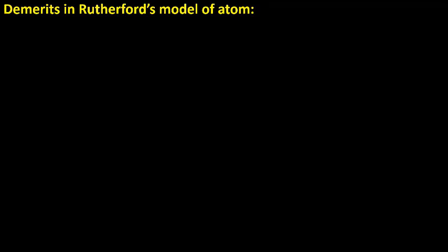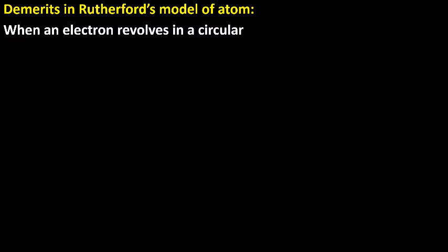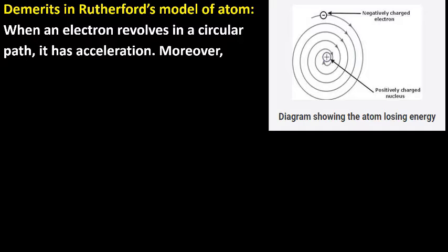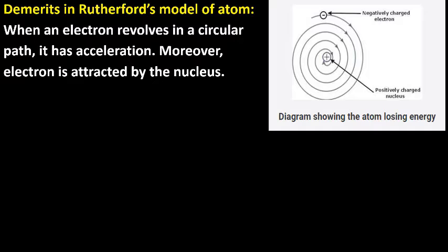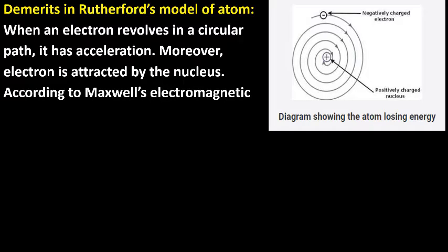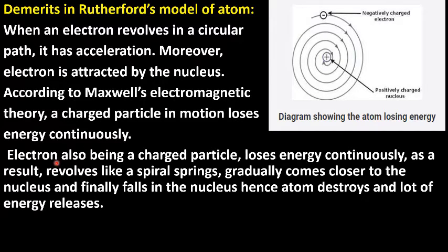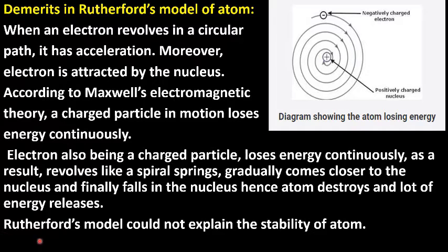Let us recapitulate the demerits in Rutherford's model of atom. When an electron revolves in a circular path, it has acceleration, and moreover, electron is attracted by the nucleus. According to Maxwell's electromagnetic theory, a charged particle in motion loses energy continuously. Electron, also being a charged particle, loses energy continuously. As a result, it revolves like a spiral spring, gradually comes closer to the nucleus, and finally falls into the nucleus. Hence, atom destroys and a lot of energy releases. Rutherford's model thus could not explain the stability of atom.